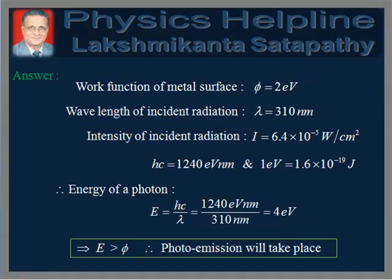Wavelength of incident radiation λ = 310 nanometers. Intensity of incident radiation I = 6.4 × 10⁻⁵ watts per centimeter square. hc = 1240 electron volts nanometers, and 1 electron volt = 1.6 × 10⁻¹⁹ joules.